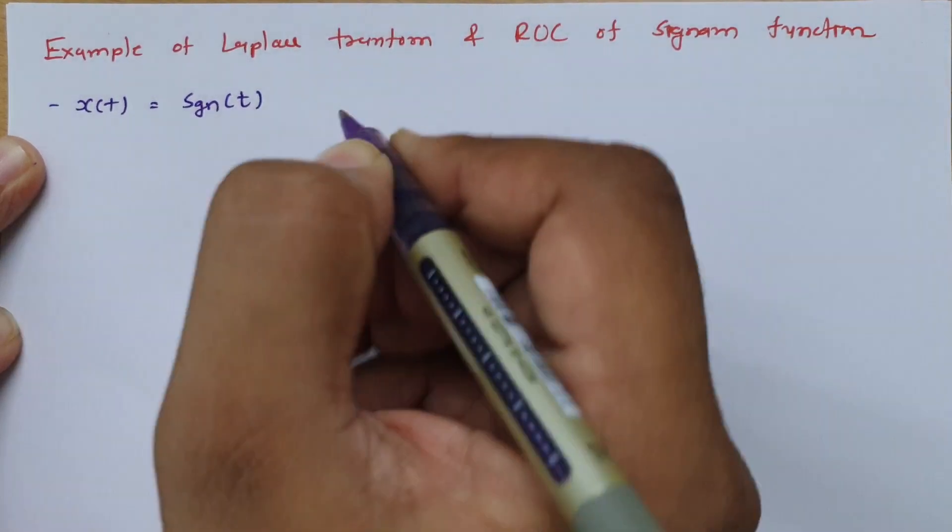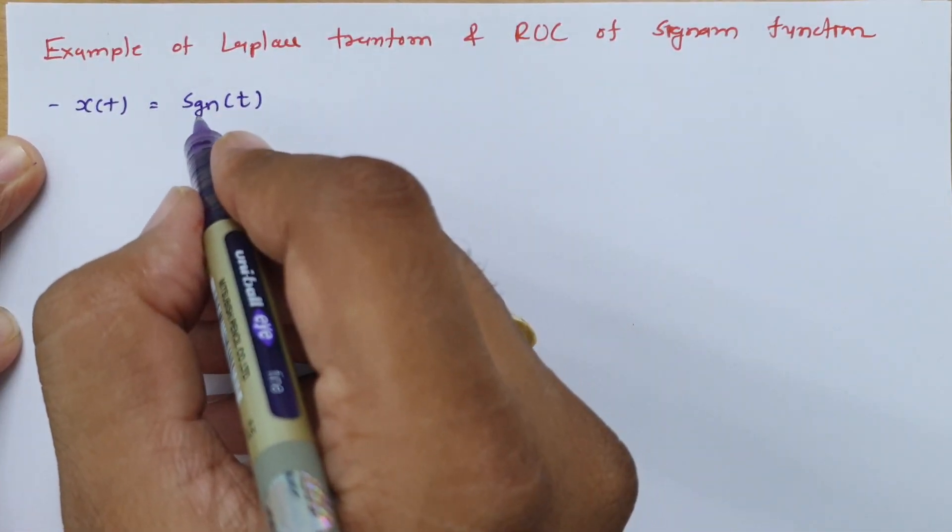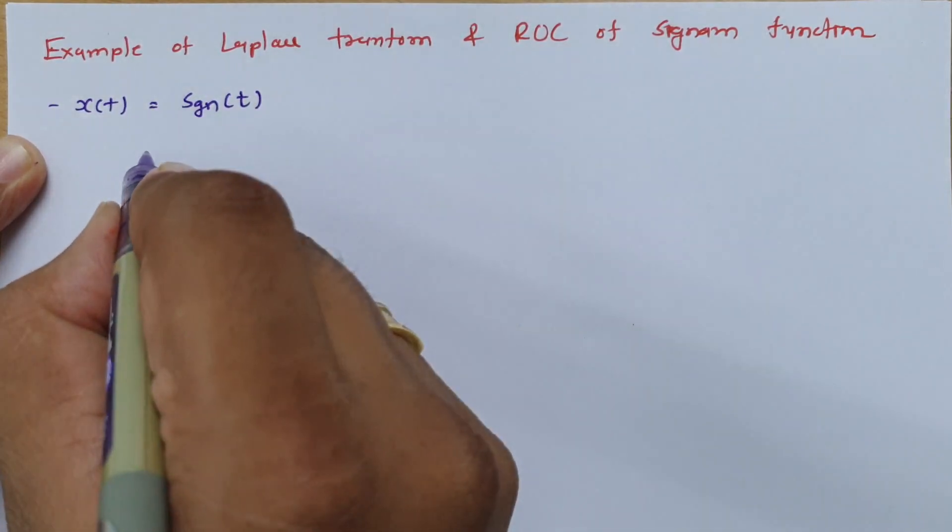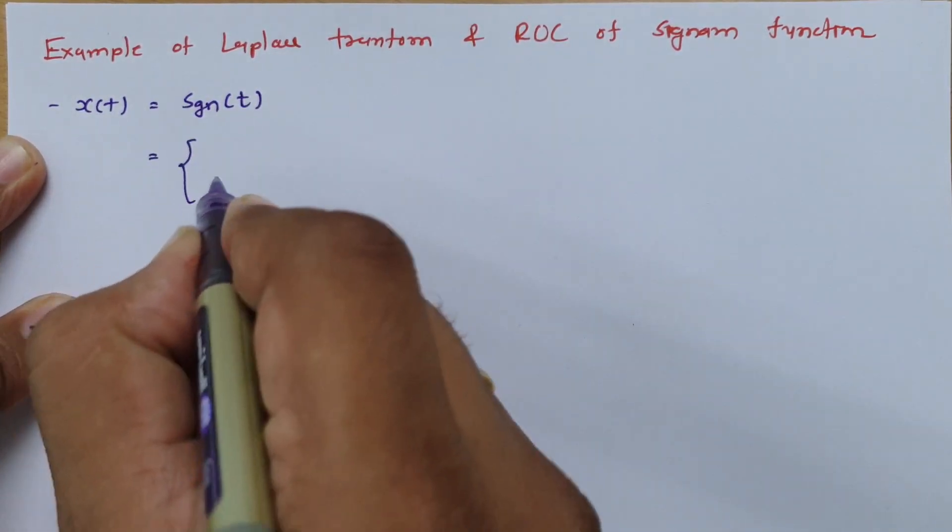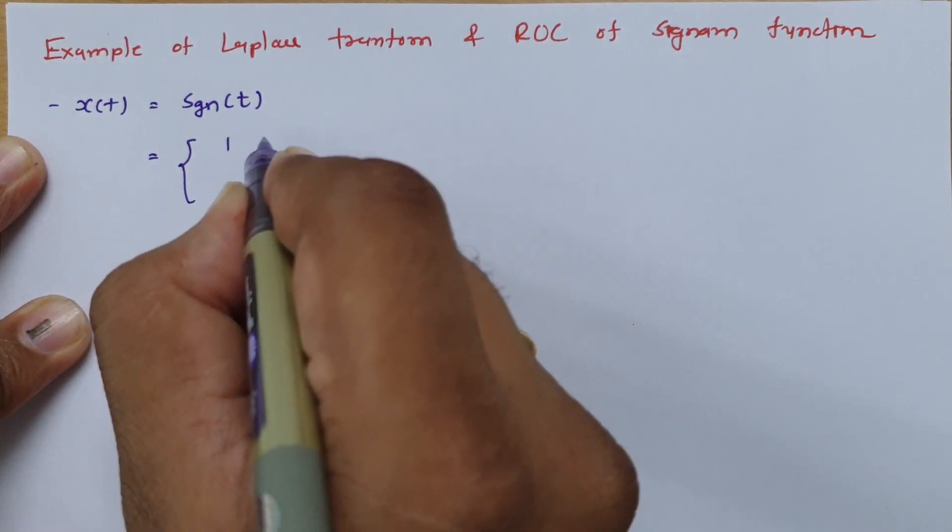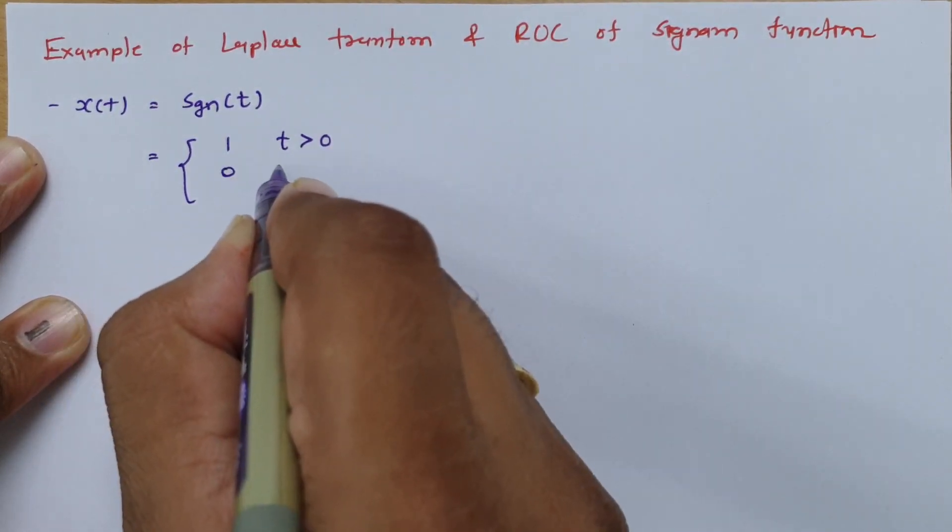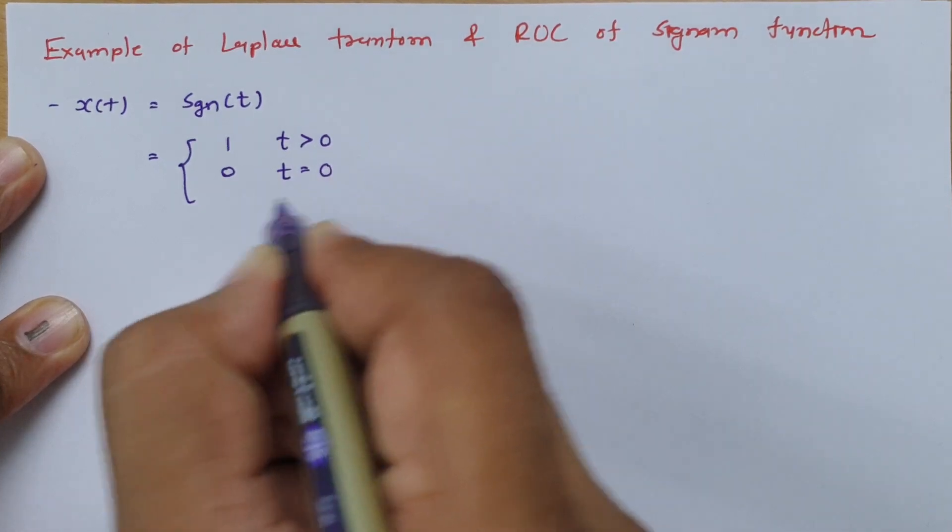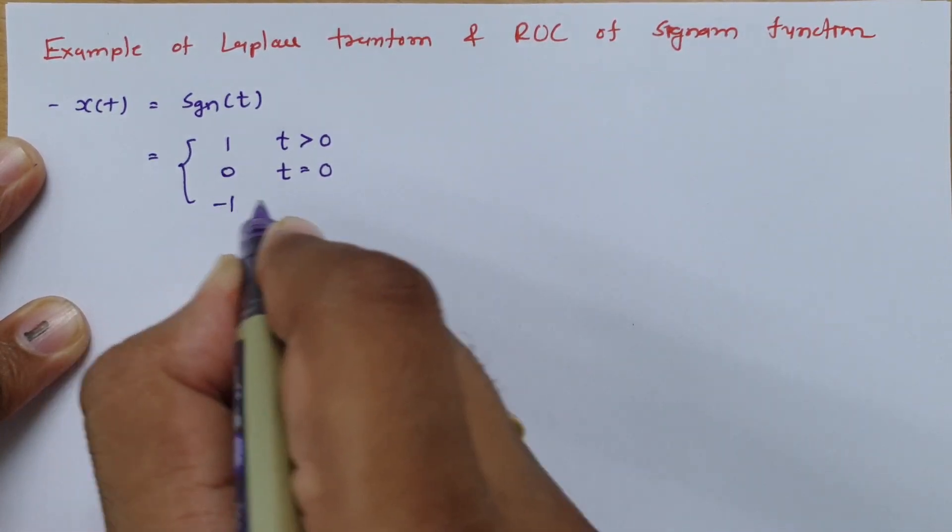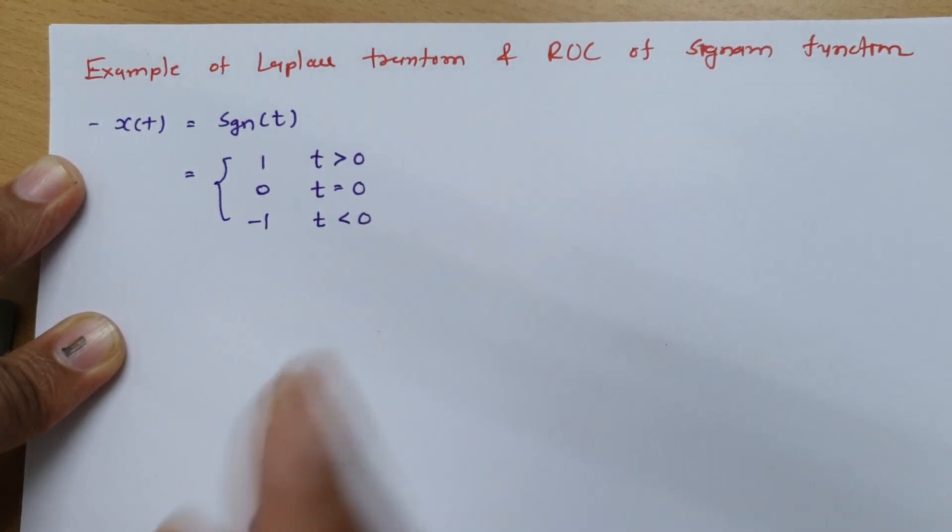So usually we write signum function like this as sgn of t and as we know basically its value is 1 for t greater than 0, its value is 0 for t equals 0, and its value is minus 1 for t less than 0.